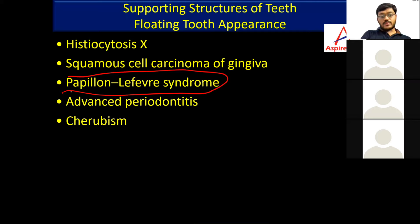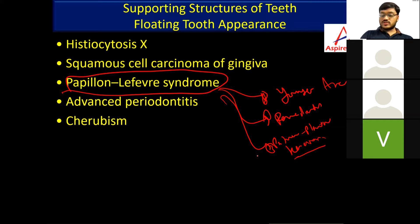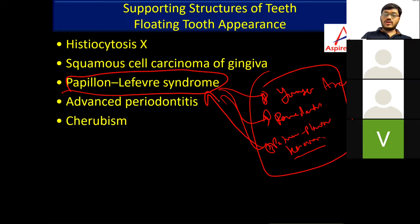Now, what will we see in Papillon-Lefèvre syndrome? It is mostly seen in younger age. You will see periodontitis and you will also see palmar and plantar keratosis. These are the findings in Papillon-Lefèvre syndrome. In the exam, one image showed a young child with periodontitis along with images of keratosis of the palms and feet — in that case the diagnosis is Papillon-Lefèvre syndrome. In advanced periodontitis or periodontal abscess, you will also see floating tooth appearance.